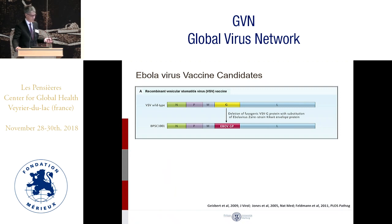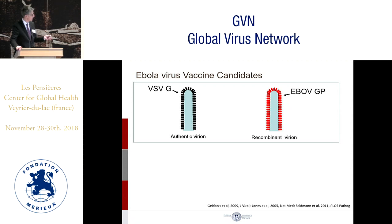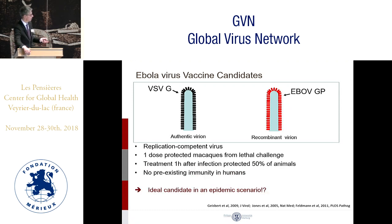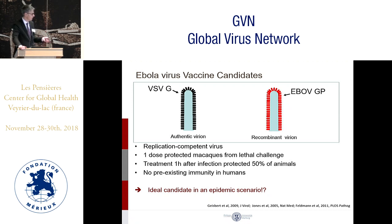In this vaccine, the glycoprotein of the vesicular stomatitis virus is replaced by the Ebola virus glycoprotein. This was developed by Heinz Feldman. It is a replication-competent virus, and one dose is sufficient to protect macaques from a lethal challenge. Treatment one hour after infection protected 50% of the animals. Importantly, there is no pre-existing immunity to VSV in humans, making it an ideal candidate in an epidemic scenario. However, at the time the West African outbreak started, no clinical study had yet been done with this vaccine.